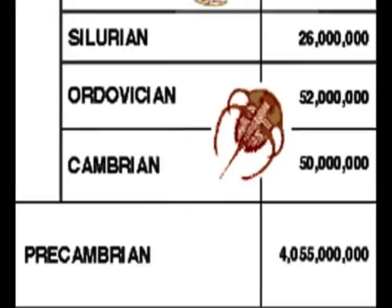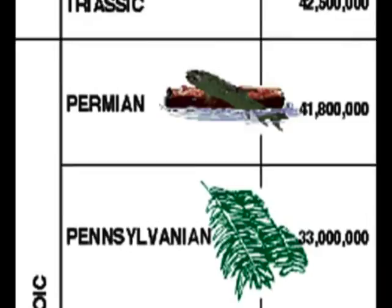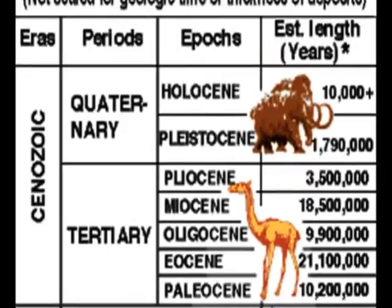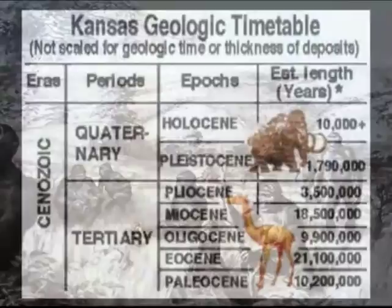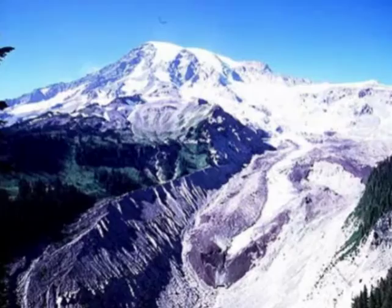The Pleistocene is a remarkable epoch in the geological calendar. Marked by the appearance of main and great climatic events, it is generally believed that this epoch began around 1.8 million years ago. The Pleistocene was known for its ice ages, when many glaciers covered many parts of the earth, including the seas.